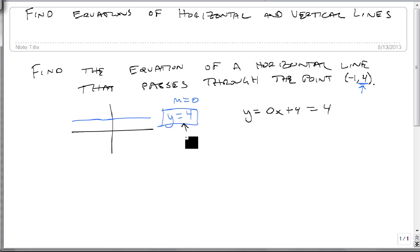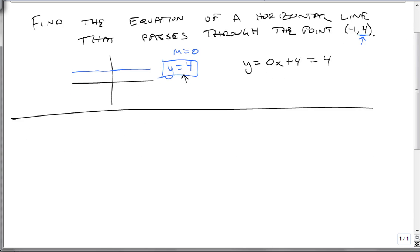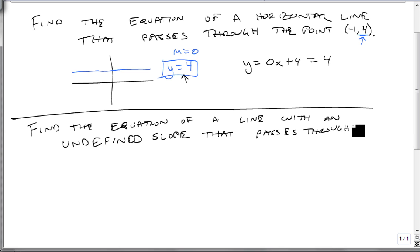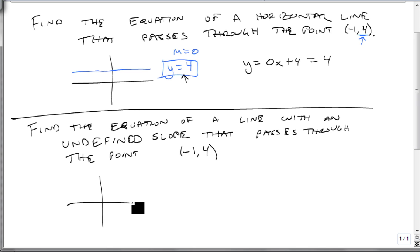Horizontal lines always have the form y equals a constant. Now, what if we change the problem just a little bit? Instead of a horizontal line, what if we said: find the equation of a line with an undefined slope that passes through the point (-1, 4)? The only type of line that has an undefined slope is a vertical line.